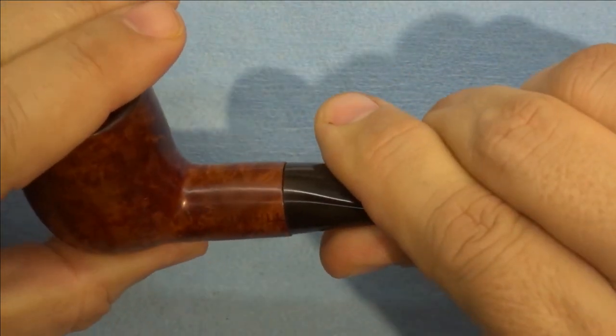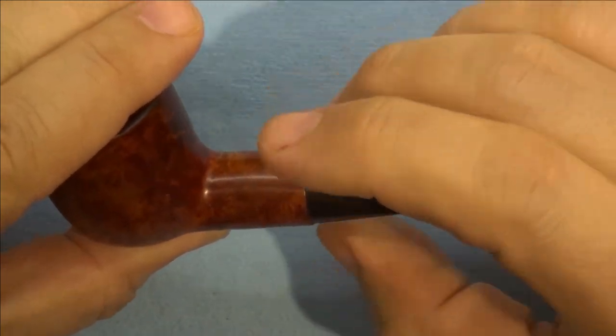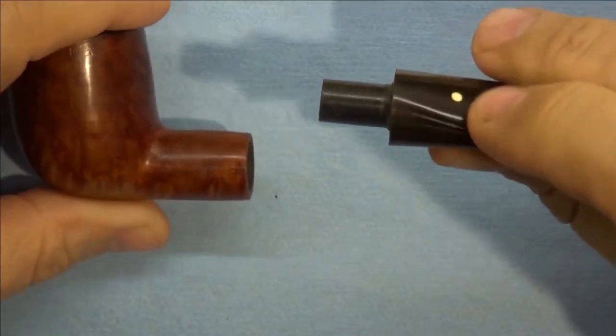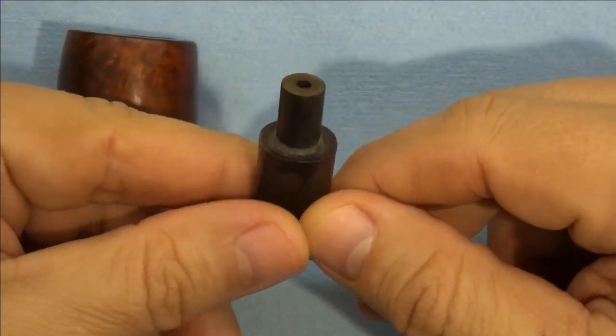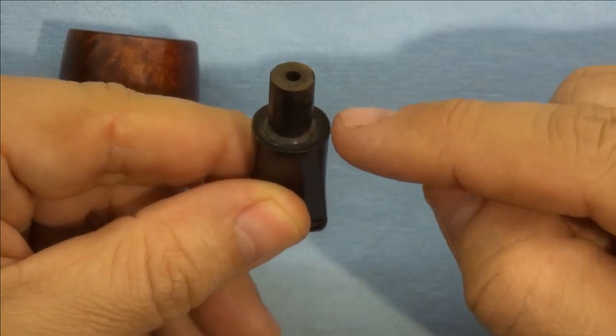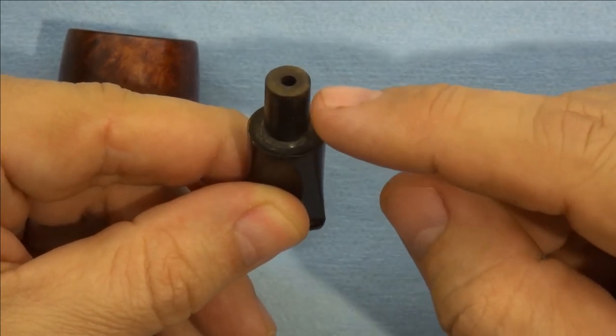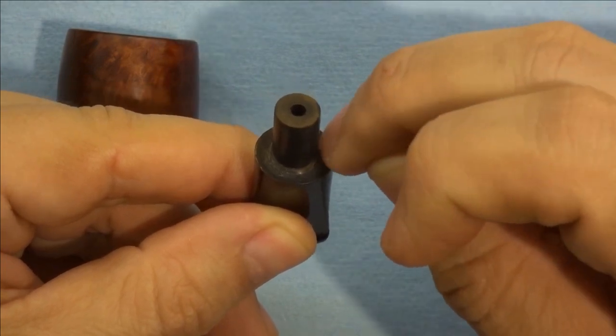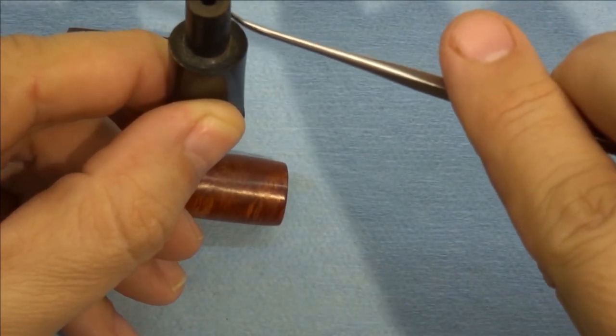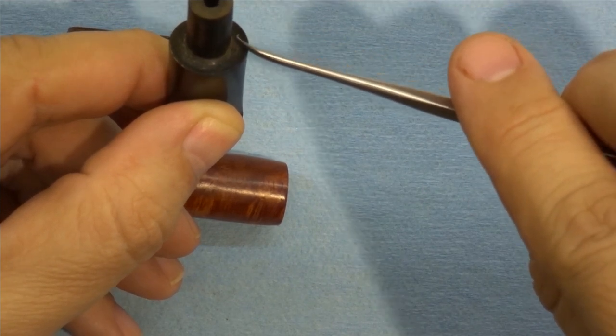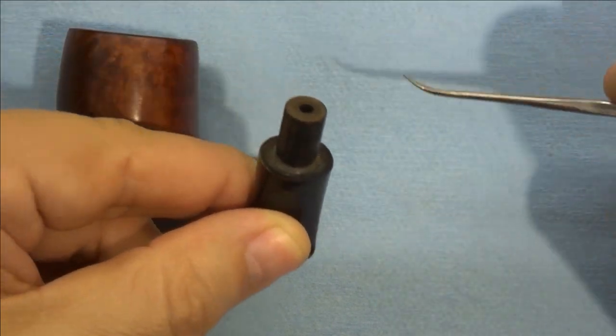The problem with the stem is that it just doesn't line up properly. The most obvious issue might be that the tenon is not 90 degrees to the face of the stem here. In other words, the surface here is not 90 degrees to the surface here.